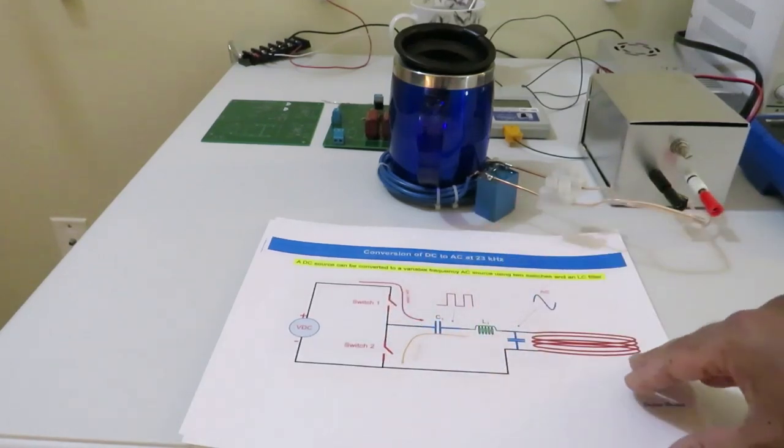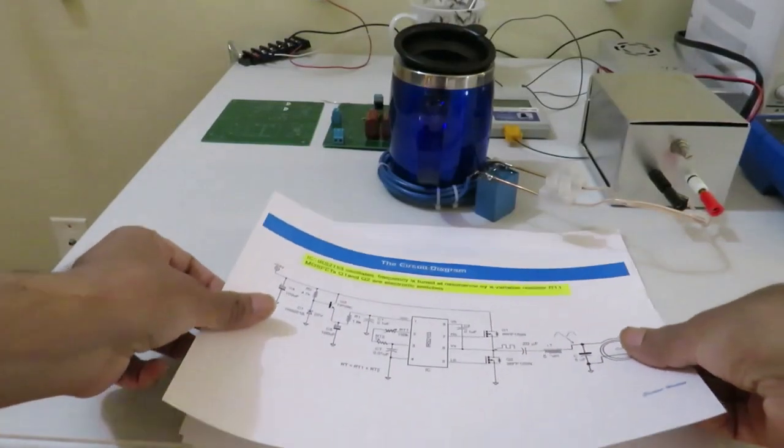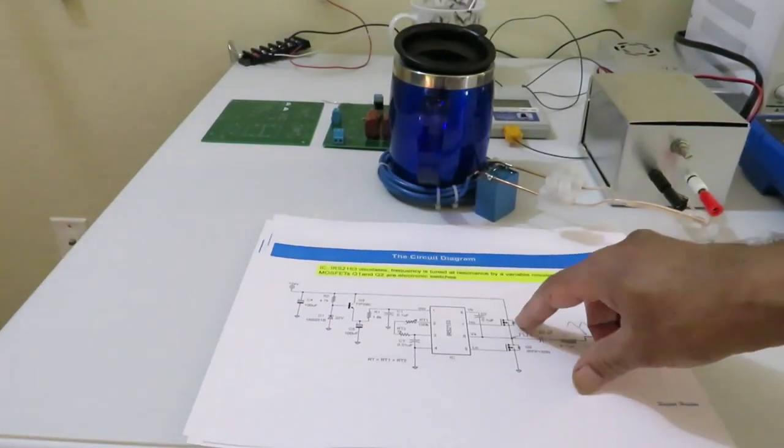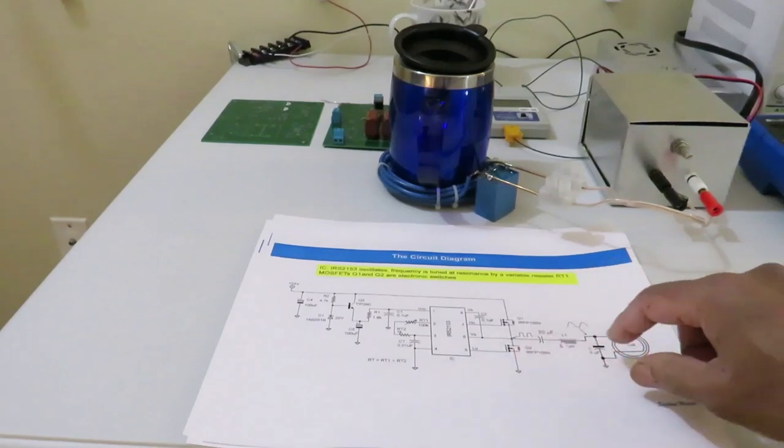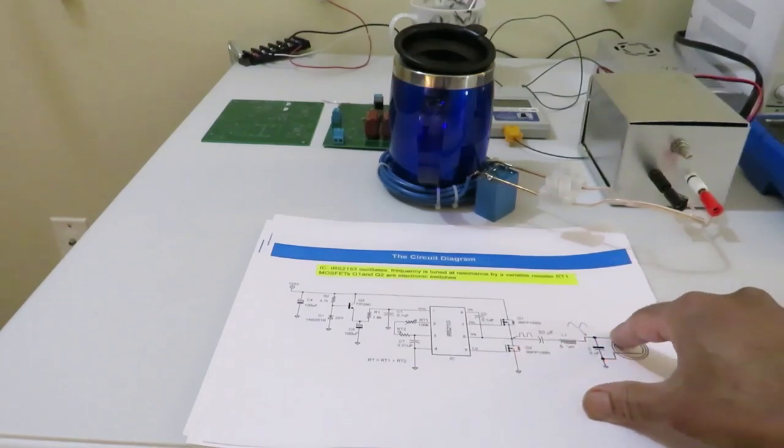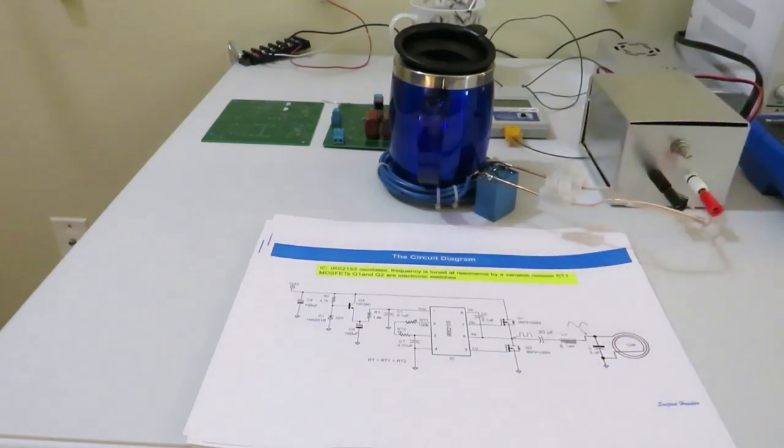And when the bottom switch is on, the charged capacitor will be discharged. An alternating current will be generated in the coil. And there is an inductor just before that to make it pure AC. And this is the electronic circuit in place of two switches.